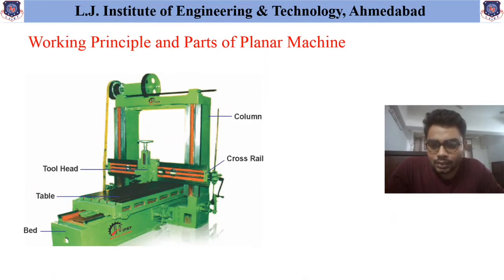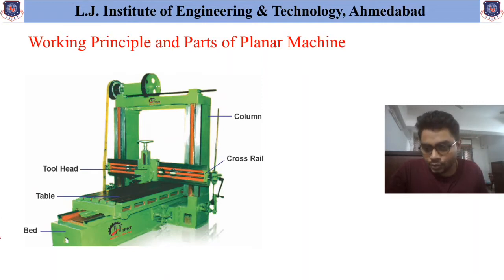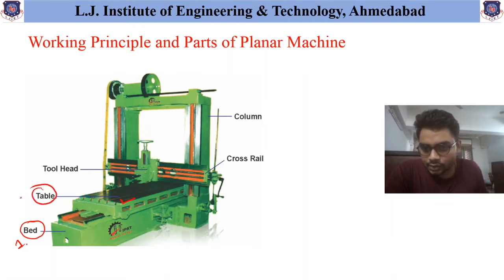As you can see, we have discussed the same parts available in the case of the Shaper Machine also — most of the parts are similar — but the movement provided to the tool and the table is different. The first part is the bed, and the second part is called the table, over which the workpiece is set.